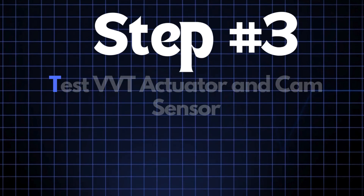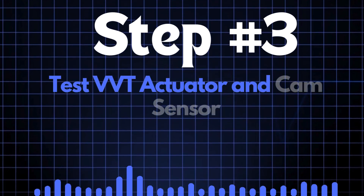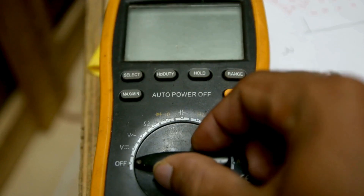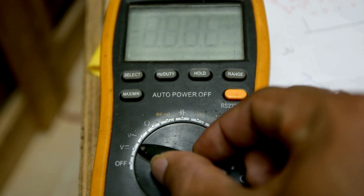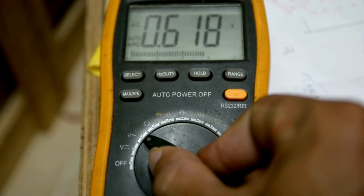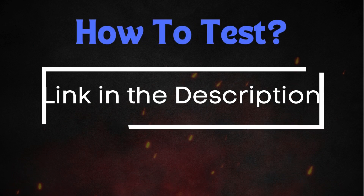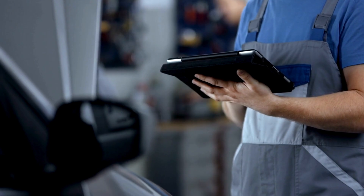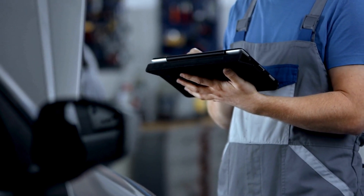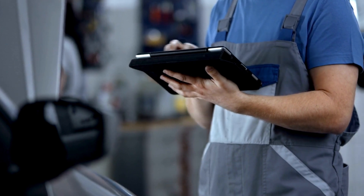Step 3: Test VVT actuator and cam sensors. You can test the VVT actuator and cam sensors using a multimeter. The process can vary depending on the type of cam sensor you have. If your vehicle uses a hall effect sensor, the testing method will differ from that of a permanent magnetic sensor. To learn more about testing the VVT actuator and cam sensors, check out our detailed video on this topic.